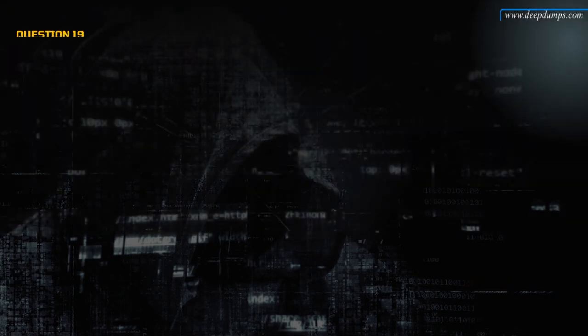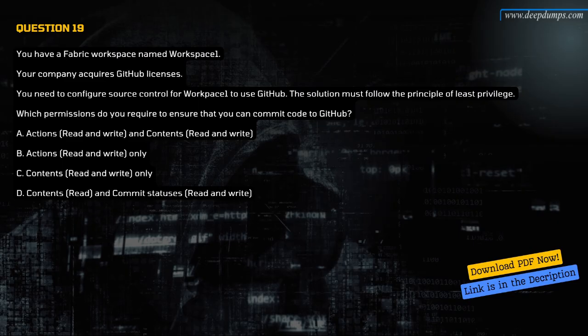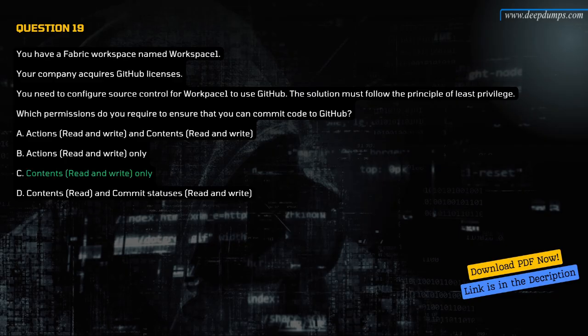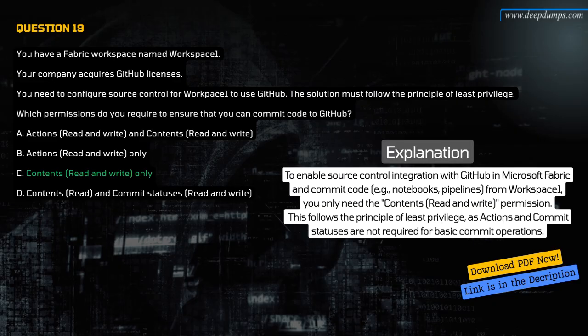Question 19. You have a Fabric workspace named Workspace 1. Your company acquires GitHub licenses. You need to configure source control for Workspace 1 to use GitHub. The solution must follow the principle of least privilege. Which permissions do you require to ensure that you can commit code to GitHub? A. Actions read and write, and contents read and write. B. Actions read and write only. C. Contents read and write only. D. Contents read and commit statuses read and write. The correct answer is C. Contents read and write only. Contents read and write is all you need to commit to GitHub via Fabric — no need for broader GitHub permissions.